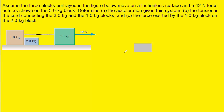Now on to Part C, which asks for the force exerted by the one kilogram block on the two kilogram block. To understand this, we draw a free body diagram of the two kilogram block. It's accelerating to the right, which means there is a force pushing it to the right — the source of that force is the one kilogram block pushing on the two kilogram block. The gravitational force mg and the normal force cancel each other out as they are equal in magnitude.